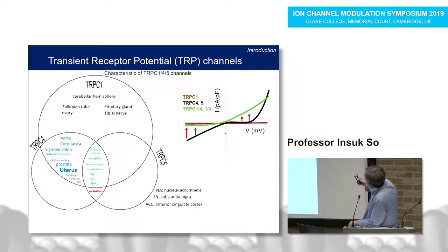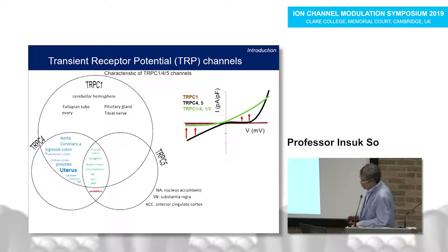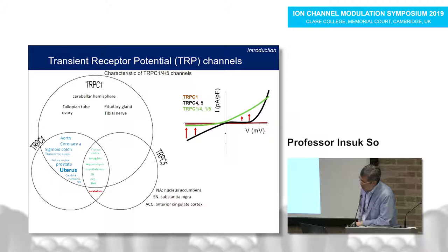Homomeric TRPC4 and TRPC5 channels show a double rectifying IV curve — both outer and inner rectification. TRPC1 shows outer rectification, and TRPC1/4 and TRPC1/5 heteromers also show outer rectifying IV curves.